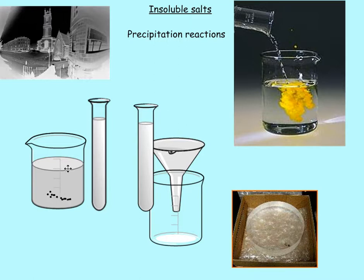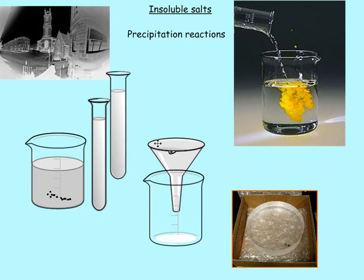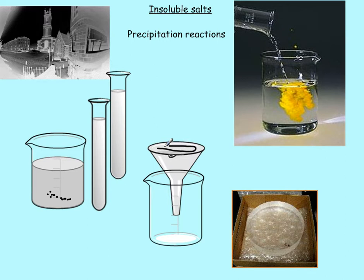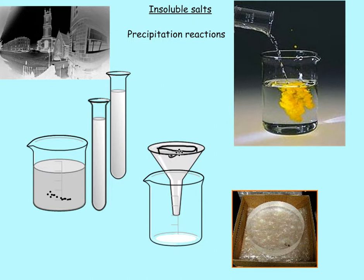To get the silver chloride out, we pour the mixture through a funnel with filter paper in it. We pour it through, and all the liquid — which is now sodium nitrate — passes down through the bottom, and we're left in the filter paper with our silver chloride, the stuff we want.